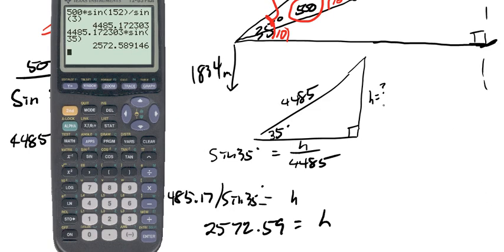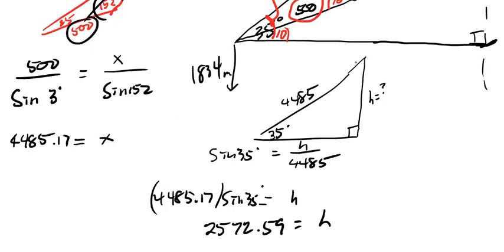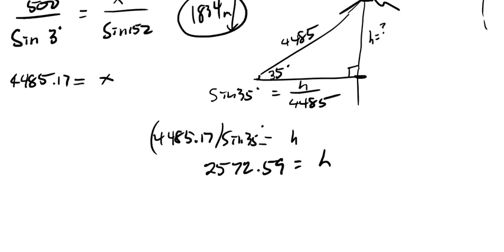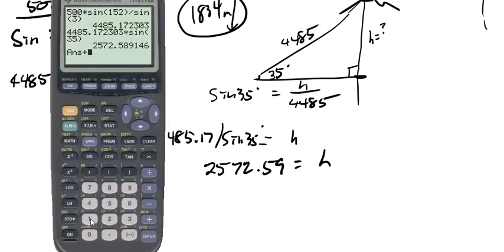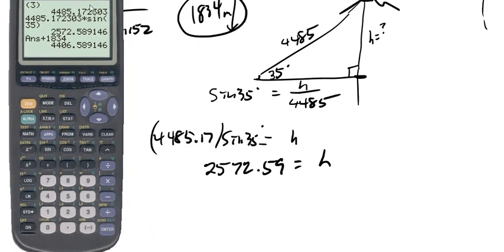That is the height from the top of the mountain to the base of the campsite. So we simply add 1834 to this number. Let's do that. So 1834 plus 2572.59.